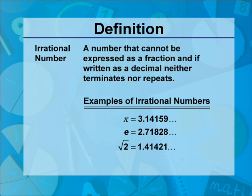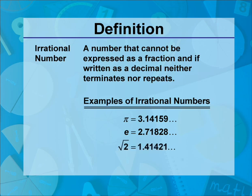Examples of irrational numbers: Pi equals 3.14159 ad infinitum. E equals 2.71828 ad infinitum. The square root of 2 equals 1.41421 ad infinitum. In each case, neither of these irrational numbers can be written as a fraction, and neither of them written as a decimal terminates or repeats.